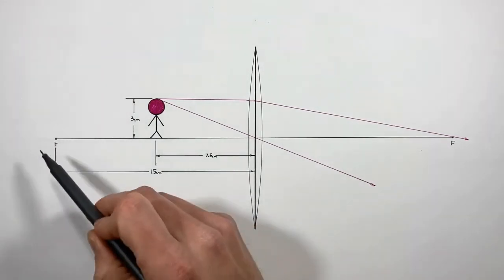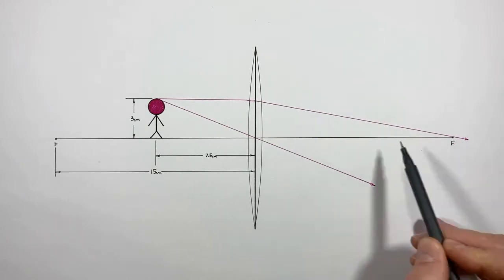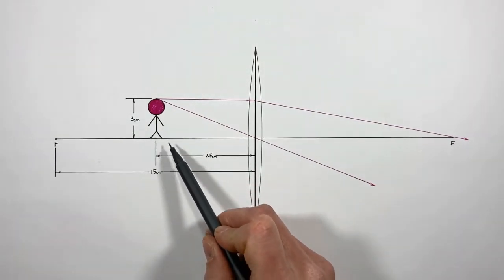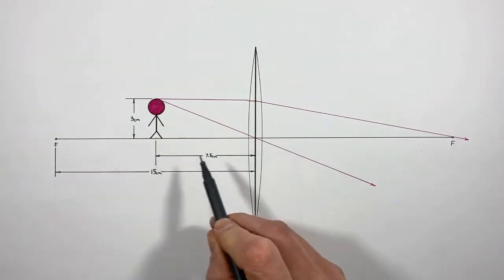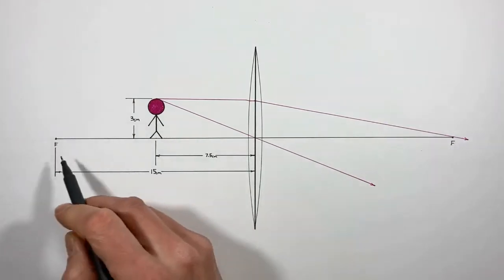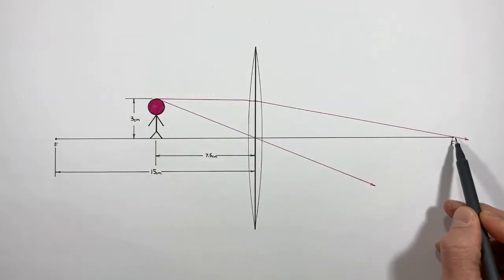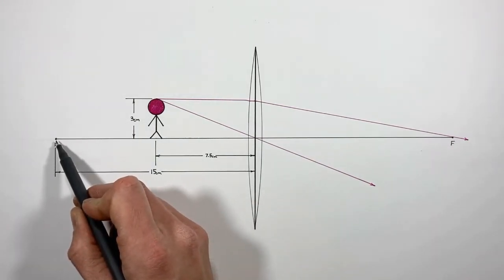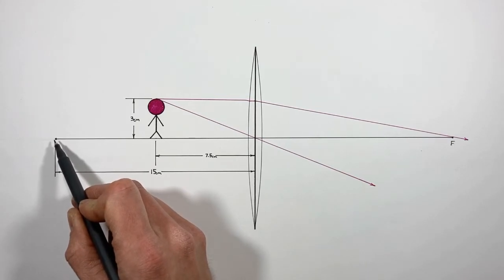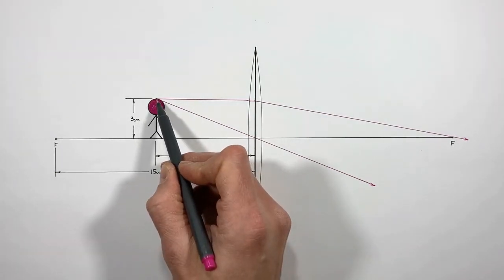Last, we're going to deal with the focal ray. Because a lens has two focal points, we need to be careful about which focal point we use when drawing our focal ray. The simplest way to determine which focal point to use is to remember that we can only use each focal point once. When we drew our principal ray, we effectively used this focal point over here, so that leaves the other focal point unused — and this is the focal point we're going to use for the focal ray.